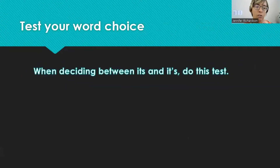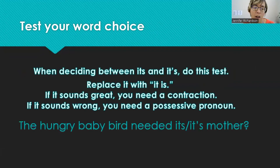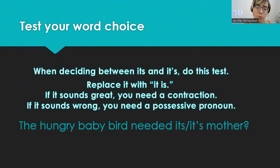Let's test it and see if you can do it. When deciding between its and it's, here's a test: replace it with it is. If it sounds right, you need a contraction. If it sounds wrong, you need a possessive pronoun. Here we go — the hungry baby bird needs its mother. Does it sound right to say the hungry baby bird needs it is mother? No, that doesn't sound right, so I don't want a contraction. I need a possessive pronoun because the mother belongs to the baby bird. In this case, we need a possessive pronoun — no apostrophe.